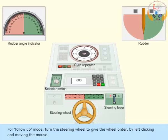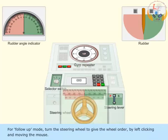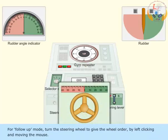For follow-up mode, turn the steering wheel to give the wheel order by left-clicking and moving the mouse.